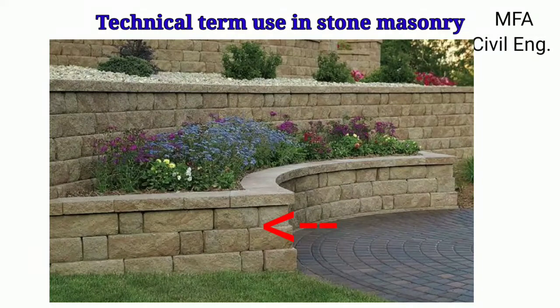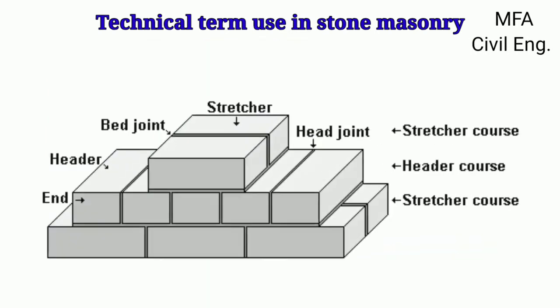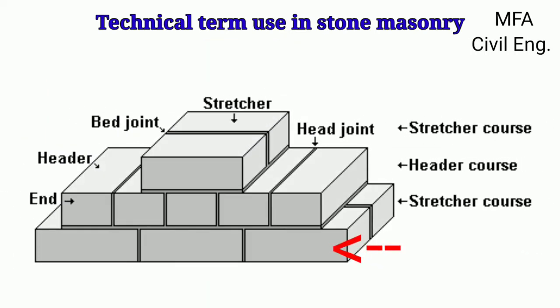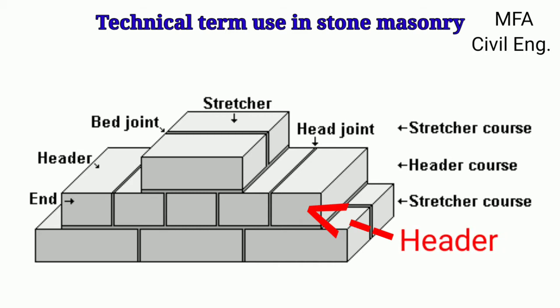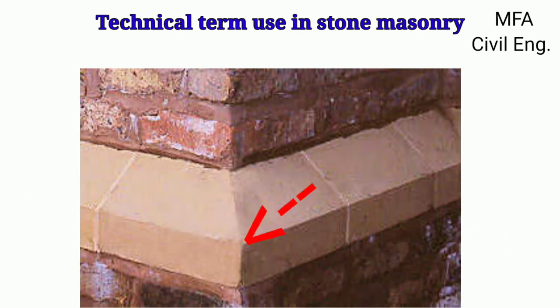The junction of two or more stones in wall construction is called a joint, and the horizontal layer of stone in a wall is called a course. The stone which lies with its longest side parallel to the face of the work is called a stretcher, and the stone which lies with its longest side perpendicular to the face of the work is called a header.